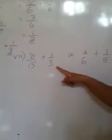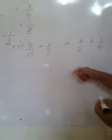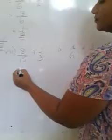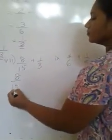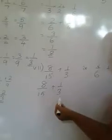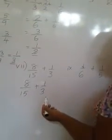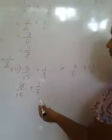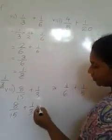This is the question I am going to explain now. So 8 fifteenths added 1 third. 15, 3. So 3 must make it into 15. 3 times 5 is 15.